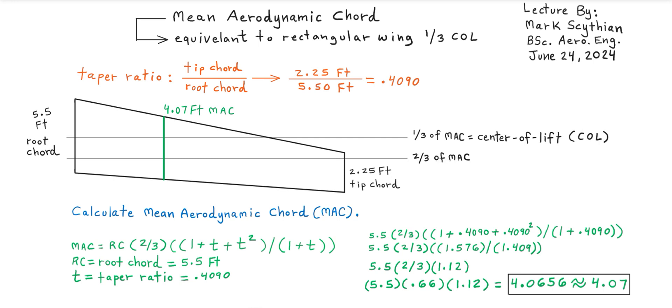If we use the formula specified here for mean aerodynamic chord, which is the root chord times 0.66 or two-thirds as a quantity fraction, then the ratio of one plus the taper ratio plus the taper ratio squared, this quantity then divided into one plus the taper ratio. If we identify the root chord, that's 5.5 feet.